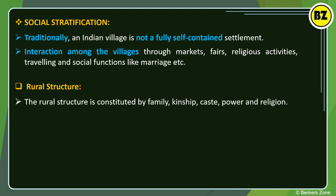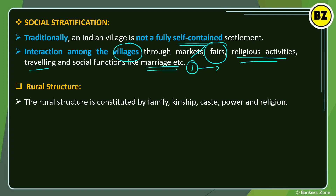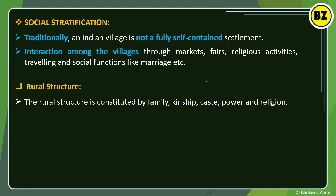The interaction among villages happens through markets, fairs, religious activities, traveling, and social functions like marriages. Since a village is not self-contained, villagers interact with other villages through these means — meeting at fairs, participating in religious activities, and attending functions in other villages.